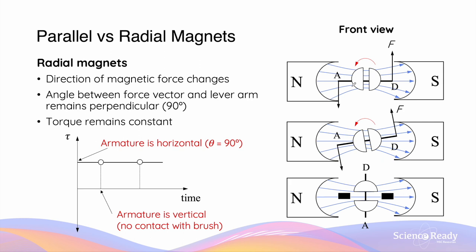The reason why the magnetic field is described as radial is because the lines are no longer straight and parallel — they converge in the middle and diverge on the side of the field. The direction of the field lines run in such a way so that the force vectors due to the motor effect do not remain in the same direction any longer. In fact, they change such that the angle between the force vectors on side A and D of the armature will remain always perpendicular to the plane of the armature, as you can see here.